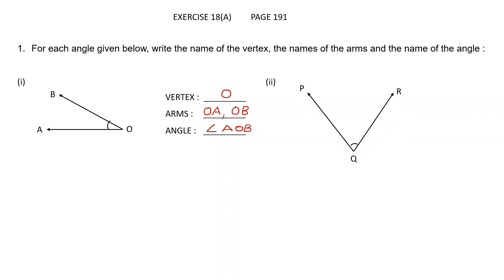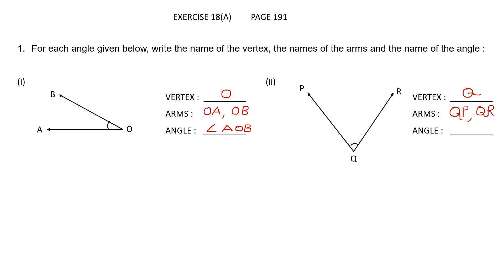Second one. The vertex is where the two rays meet, so that's the letter Q. The arms are QP and QR. Let's name the angle — remember to keep the letter Q in the middle. So angle PQR. You can also say angle RQP.